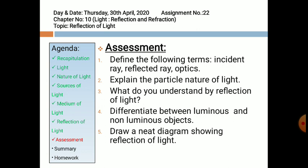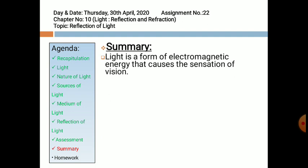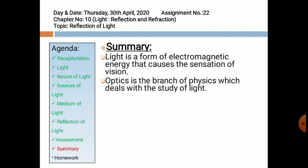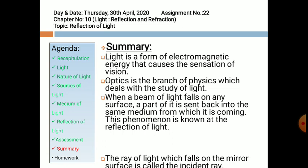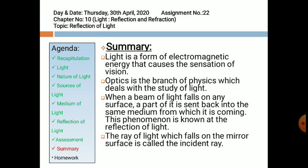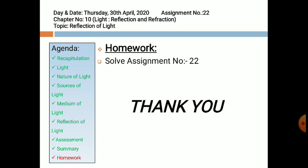Summary of today's topic: First, light is a form of electromagnetic energy that causes sensation of vision. Second, optics is the branch of physics that deals with the study of light. Third, when a beam of light falls on any surface, a part of it is sent back into the same medium — this is reflection of light. Fourth, the ray falling on the mirror surface is called the incident ray. Fifth, the ray sent back off the mirror is called the reflected ray. Today's homework is assignment number 22. Thank you, have a nice day.